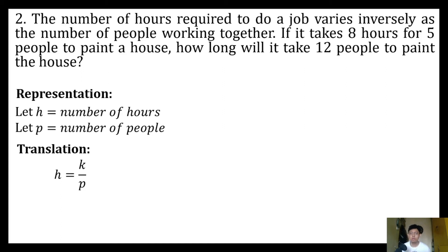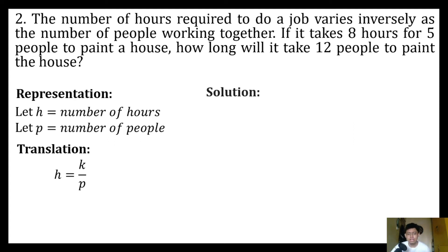In our given we already have one pair of number of hours and number of people — that is eight hours for five people to paint a house. We're going to use that to get our constant of variation, which will help us solve for our next pair of h and p.